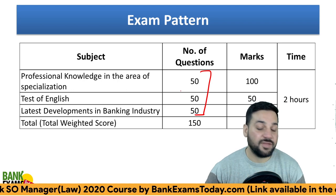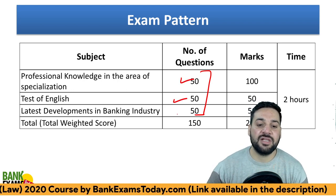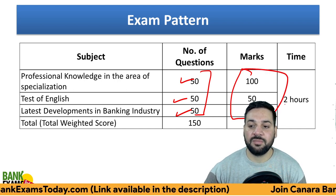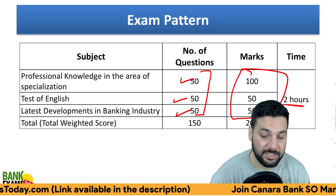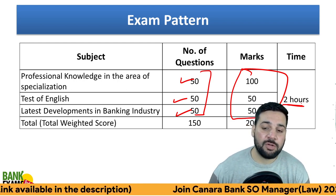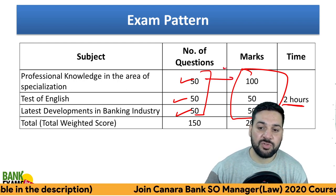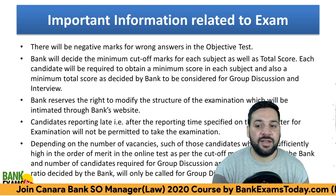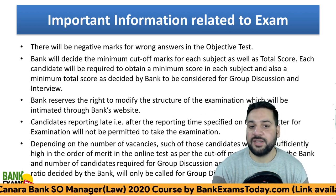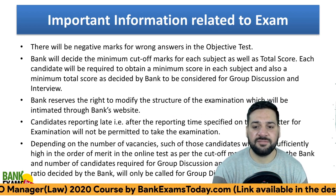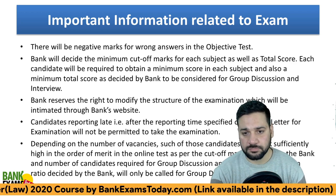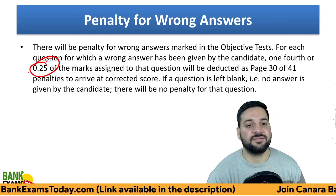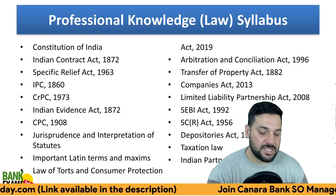Now the exam pattern — there are three sections: no quant, no reasoning. The sections are English Language, Professional Knowledge, and Latest Developments in the Banking and Financial Industry. Total marks are 200 and time allotted is two hours. One question of Professional Knowledge carries two marks; English and Banking carry one mark each. There is a negative marking of one-fourth for a wrong answer.